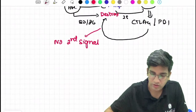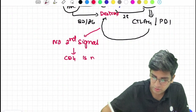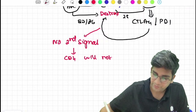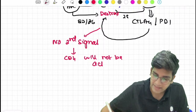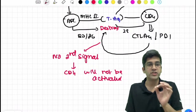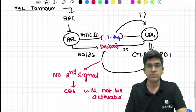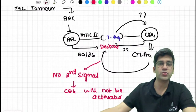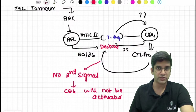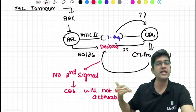When the second signal is not there, CD4 will not be activated - that is very, very important. So this is how a tumor cell is going to escape from CD4's response. We understood this around the 2000s. It's an amazing plot made by the tumor cells to escape immunity.